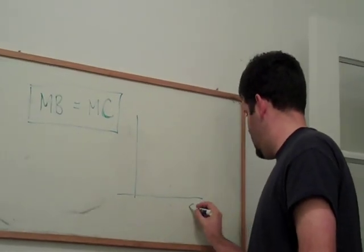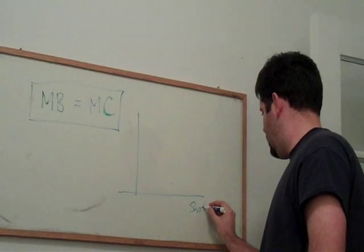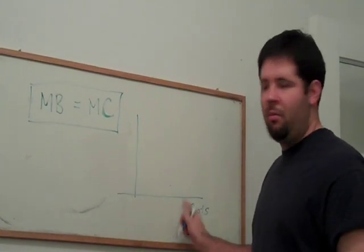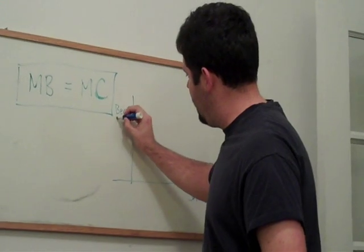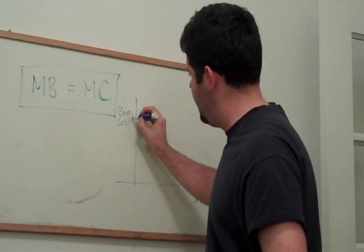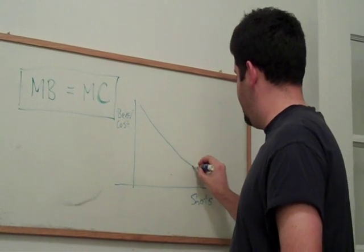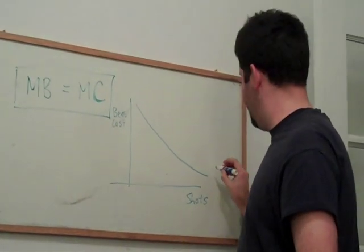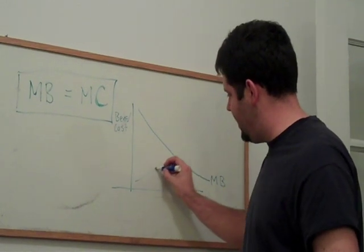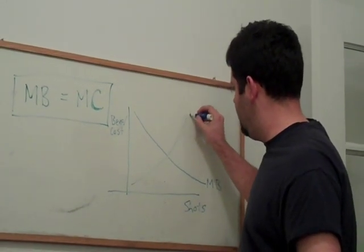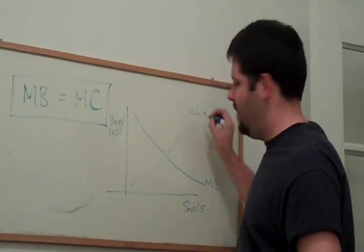You want to do this graphically. Marginal benefit or marginal cost. As the number of shots increases, the marginal benefit declines. As the number of shots increase, the marginal cost increases.